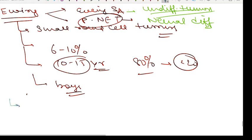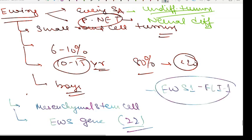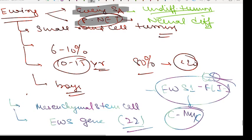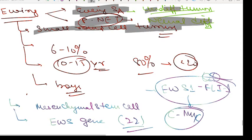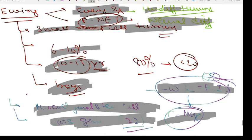Ewing sarcoma arises from multipotent mesenchymal stem cells. There is a chromosomal translocation involving the EWS gene on chromosome 22. The fusion of the EWS1 gene to the FLI1 gene occurs, which is an important MCQ point. This fusion leads to activation of c-Myc. These features apply to both Ewing sarcoma and PNET.